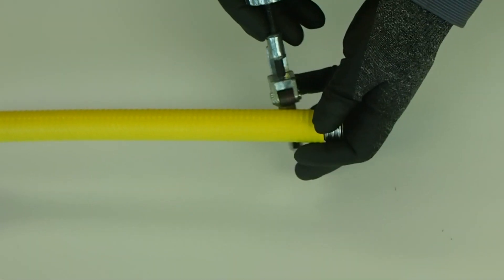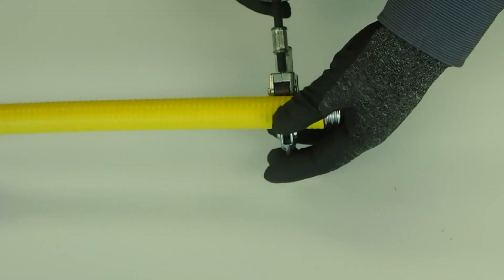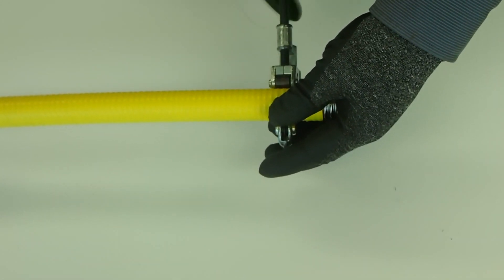Using a stainless steel tube cutter, cut the Gasflow tubing to the desired length, leaving approximately 1 inch for placement of the fitting.